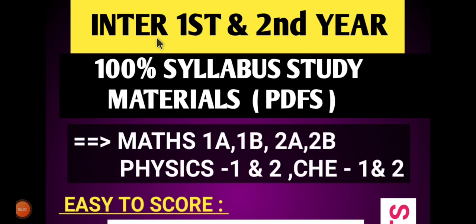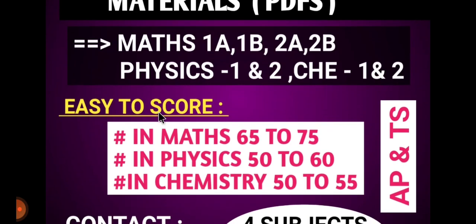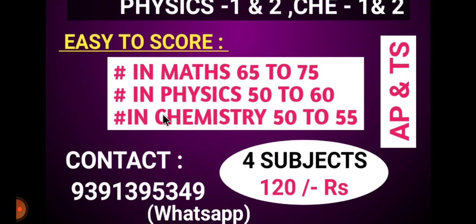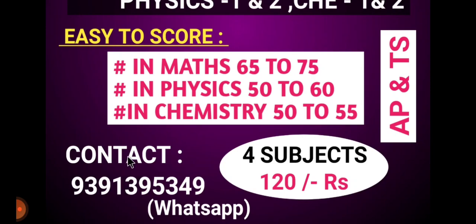Students, just one minute — intermediate first year and second year 100% syllabus study materials are available in PDF form: Maths 1A, 1B, 2A, 2B, Physics 1st and 2nd year, Chemistry 1st and 2nd year. Math class scores 65–75, Physics 50–60, Chemistry 50–55. Contact via WhatsApp. All 4 subjects for 1st and 2nd year at 120 rupees. Available for AP and Telangana students.